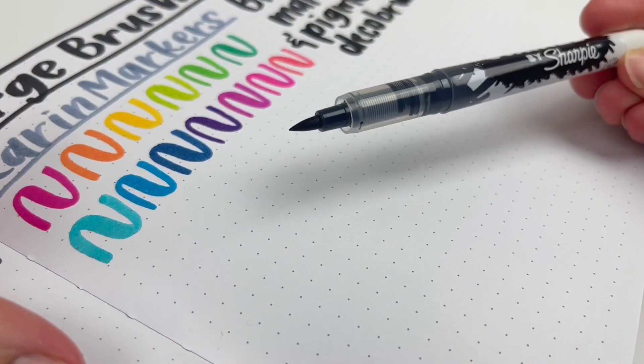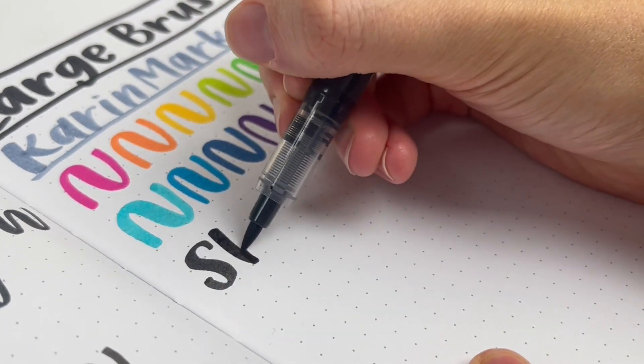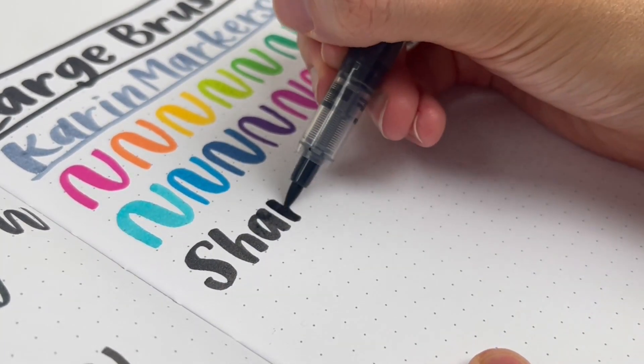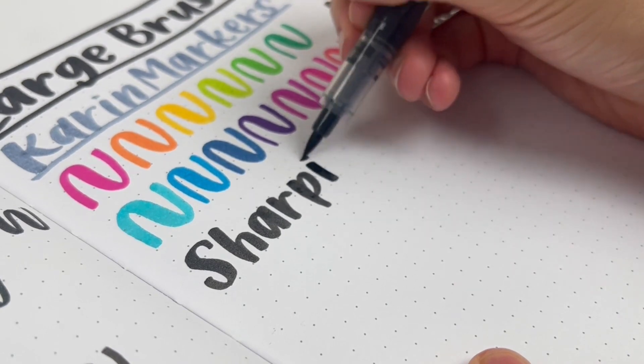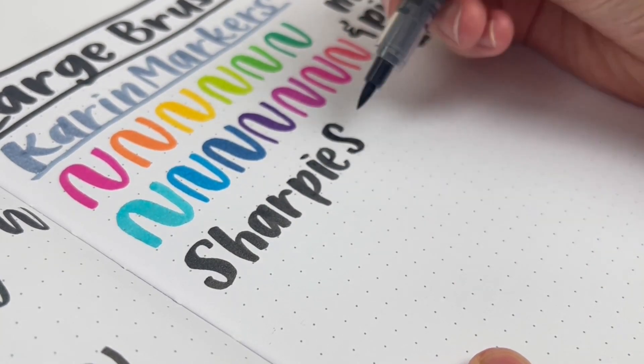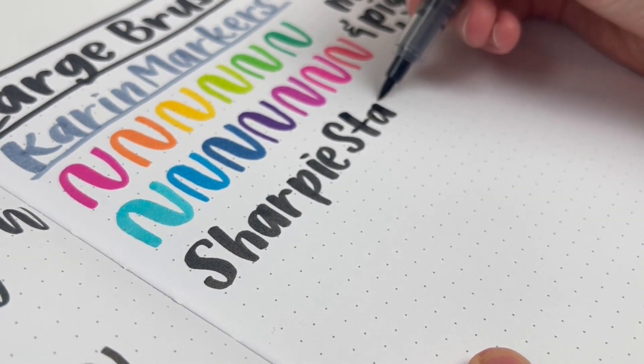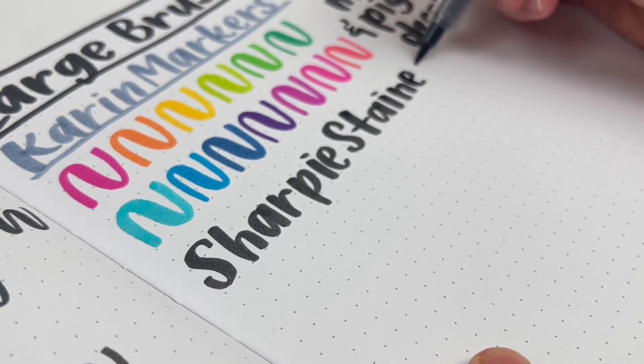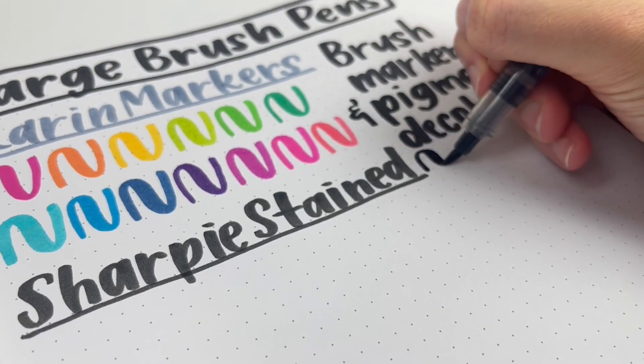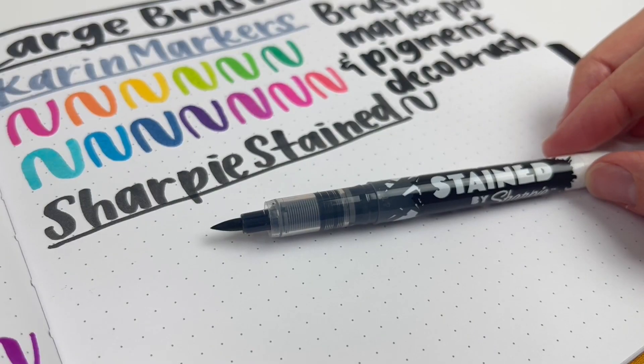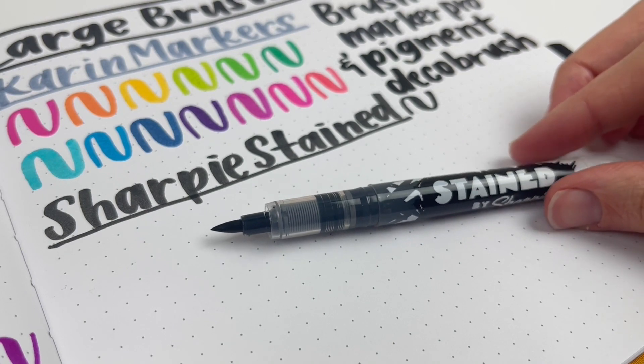First is the Sharpie Stained Brush Pen. This is actually a fabric marker, so it is permanent. But it works so well as a brush pen. I only have the black one because it only comes in neon colors, and I don't usually use neon colors. But this pen is the closest pen I have to Karen markers. That's how good it is.